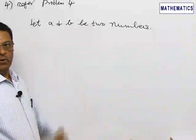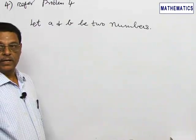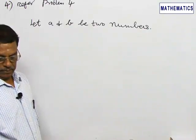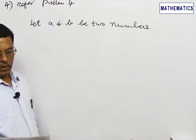Refer problem 4, given that the ratio of harmonic mean and geometric mean of two numbers to be 12 by 13.